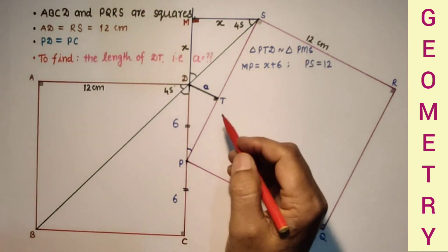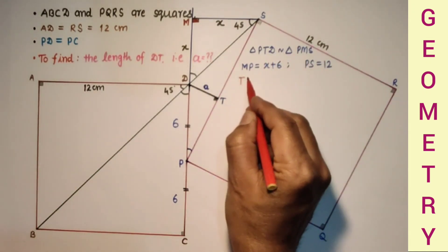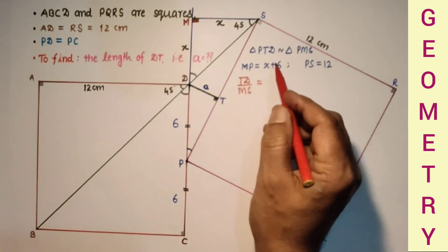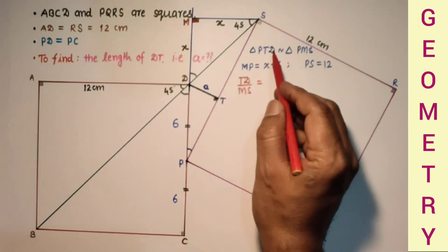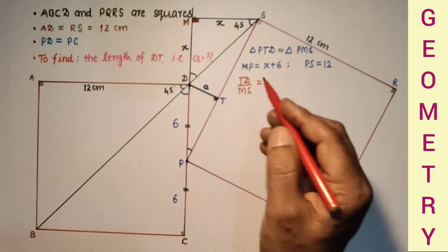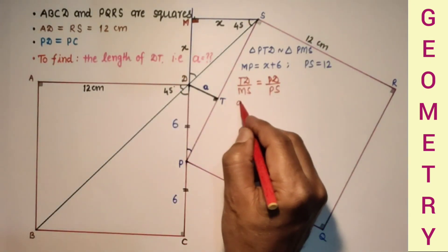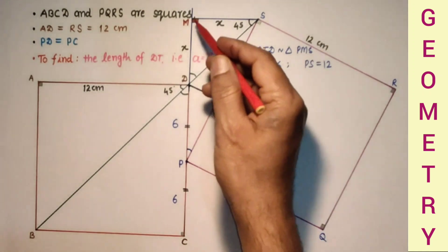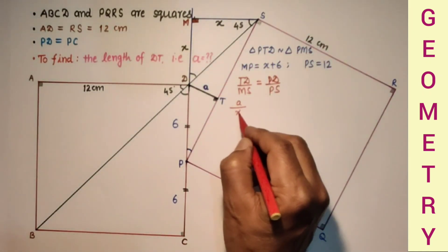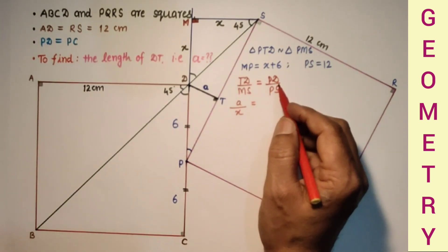We can say that TD by MS is equal to PD by PS. Corresponding sides are proportional. Here TD is A, so A by MS. And MS is X.